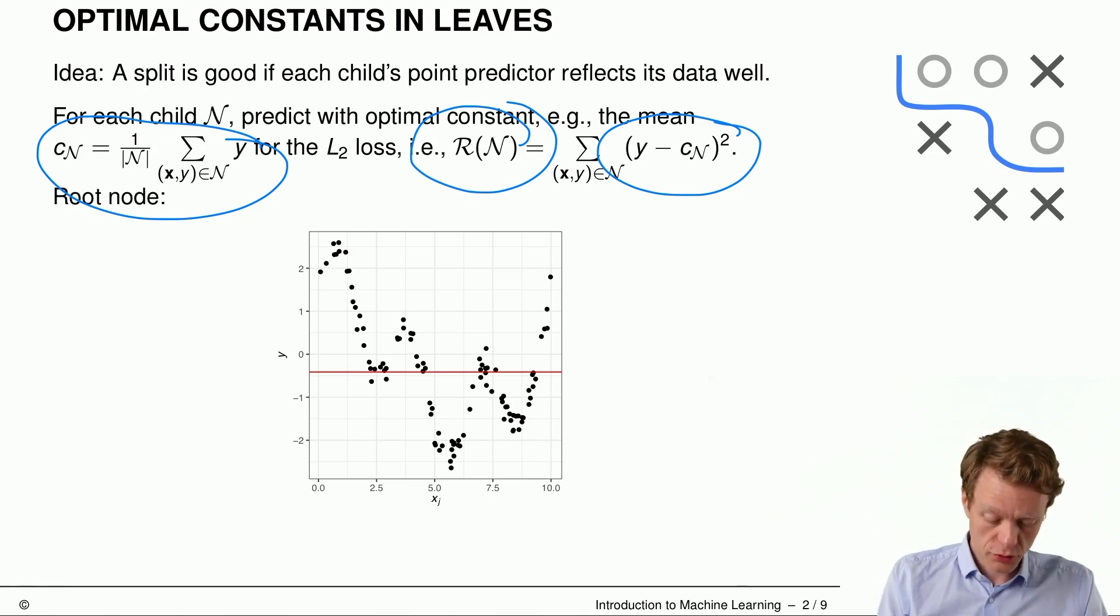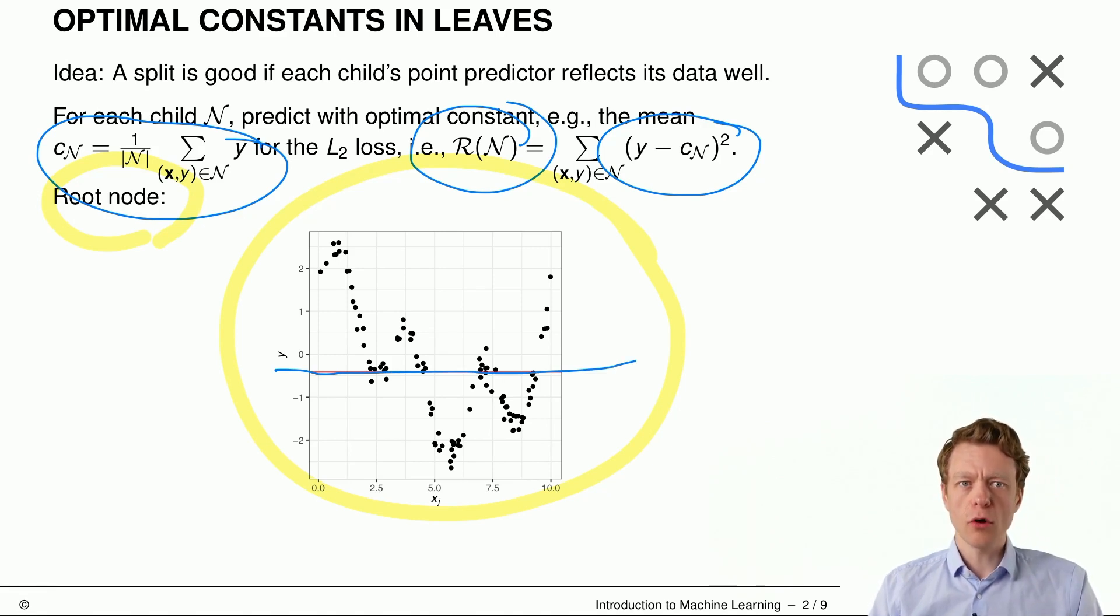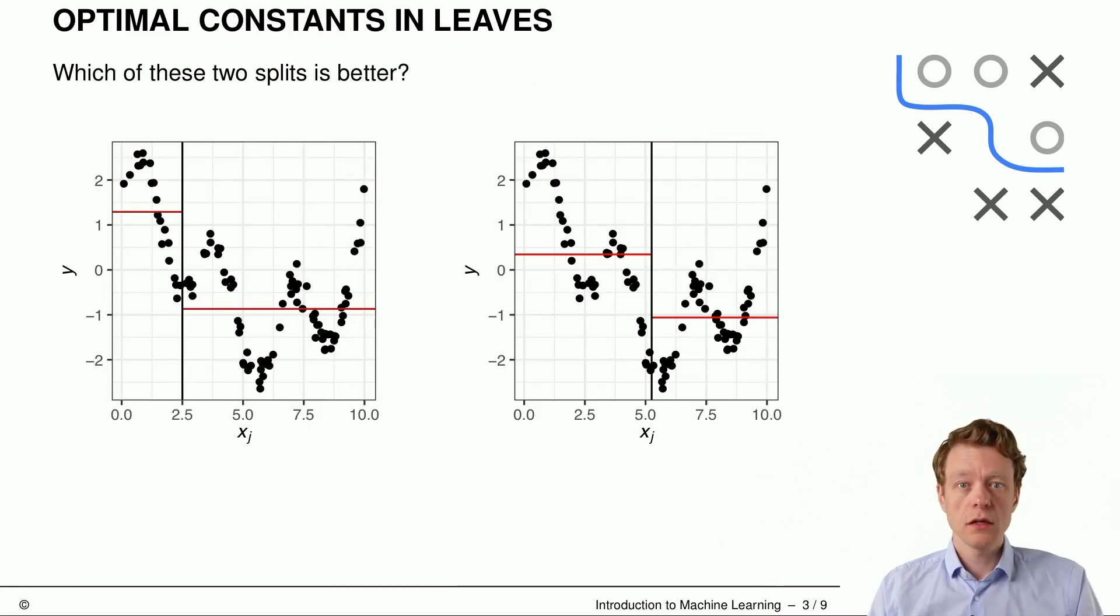So if we have a look at the root node here in this plot, then you can see that the optimal constant prediction is just exactly the mean value of all the target variables. So we did not split the data here at all. And now we can ask ourselves how should we split this root node now? So here we have two examples, perhaps none of them is the best, but we can at least decide which of them is better. So we have one on the left hand side, split at 2.5, and on the right hand side we split it at 5 point something.